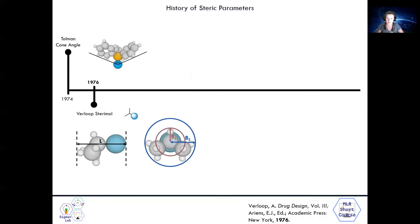In 1976, Verloop introduced multidimensional steric descriptors for substituents called sterimol parameters. Sterimol parameters have multiple values, including length, minimum width, and maximum width. For example, looking at this isopropyl group attached to a blue R group, if we define this as our principal axis, our sterimol values would be L, the length down the axis, B1, the minimum width, and B5, the maximum width.